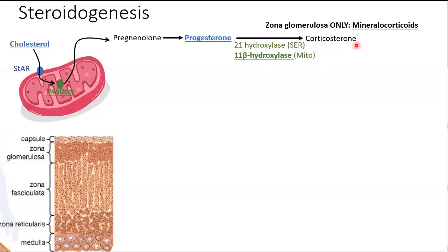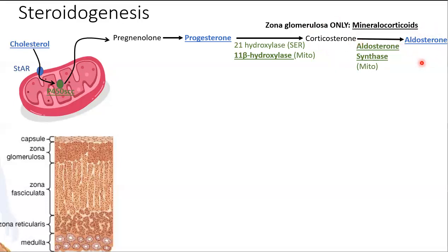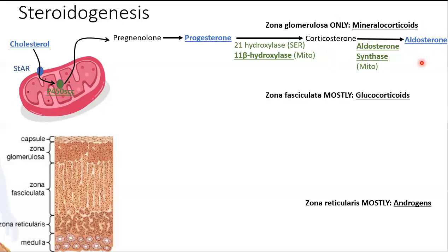Corticosterone has a weak mineralocorticoid effect, but the strongest hormone in our body to balance minerals is synthesized when aldosterone synthase modifies corticosterone to produce aldosterone, which is released under control of the renin-angiotensin system. In the zona fasciculata and reticularis, progesterone and pregnenolone are going to be converted into different steroids.